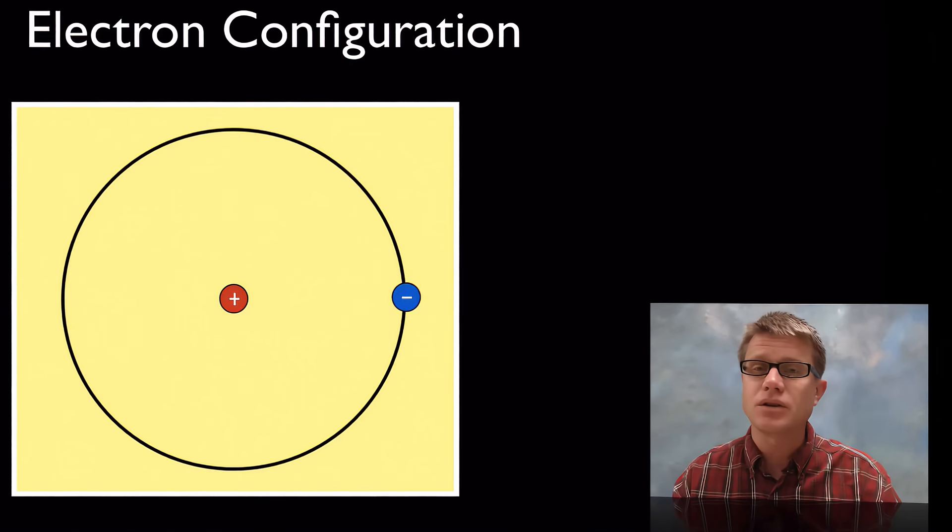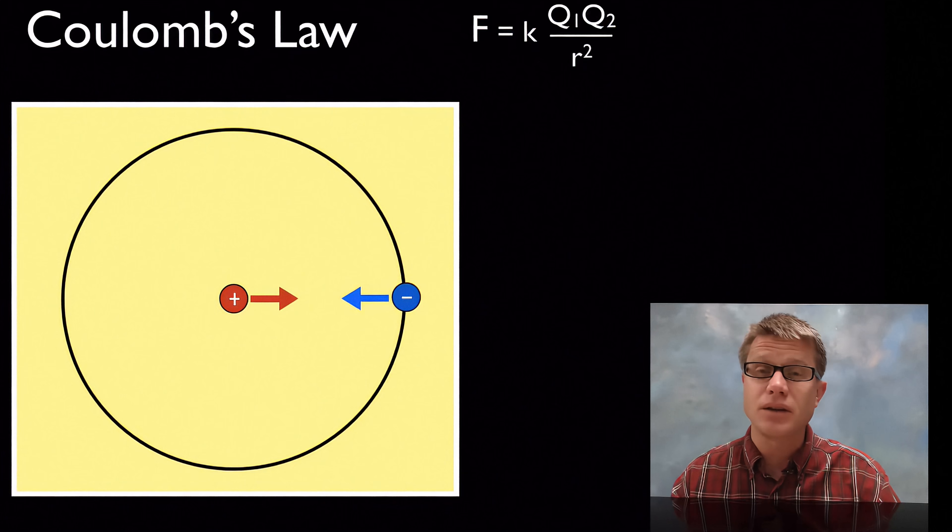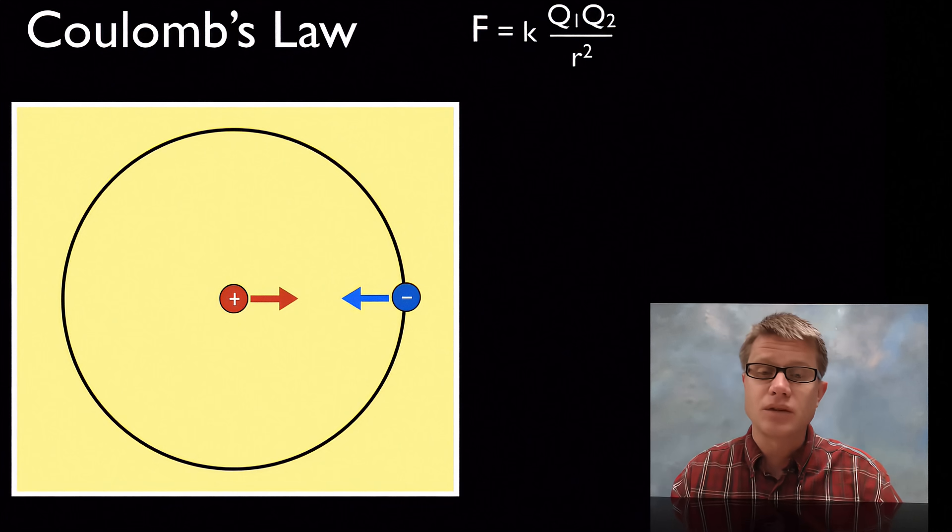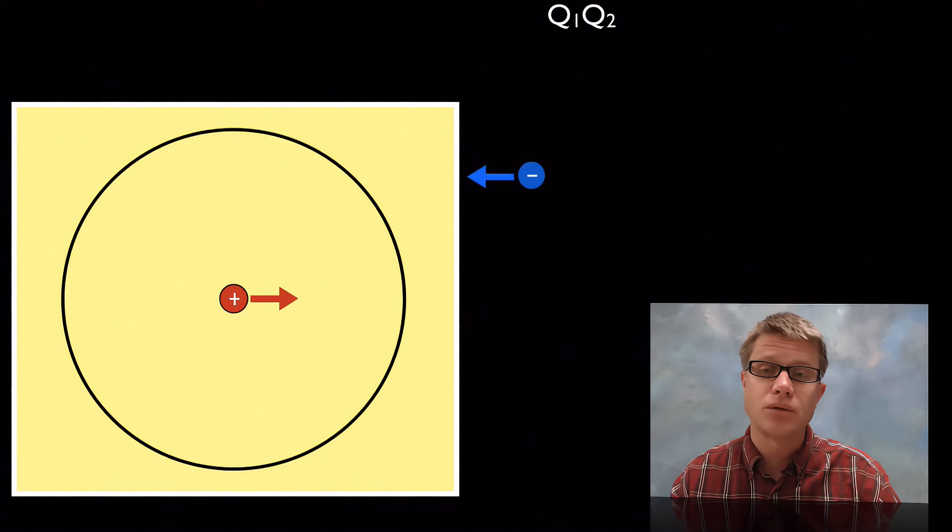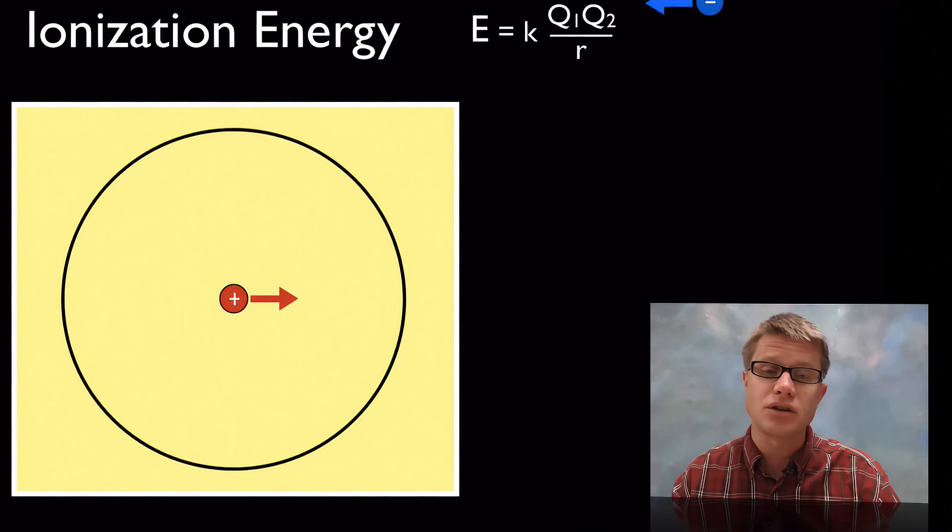And so let's look at the first and simplest of electrons. We've got hydrogen right here. One proton, one electron. And so Coulomb's law allows us to quantify the force between the two. And so it basically comes down to the charges and then the distance between the charges. And so if we were to look at ionization energy, it's the amount of energy it takes to pull that electron away.